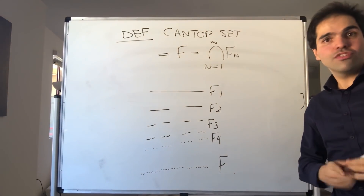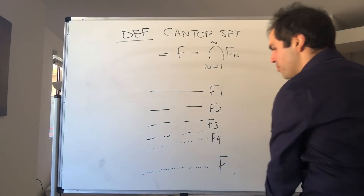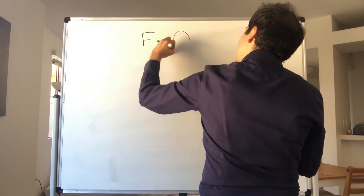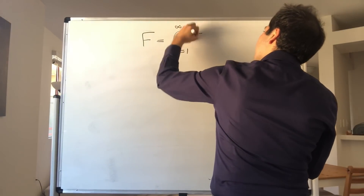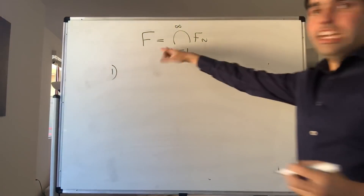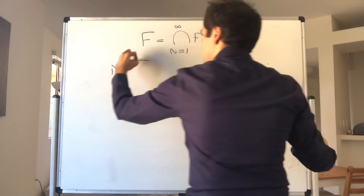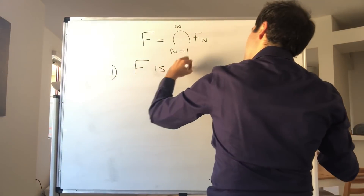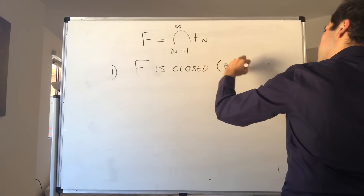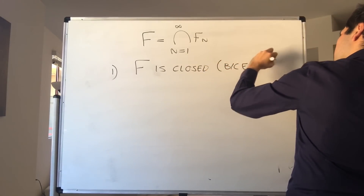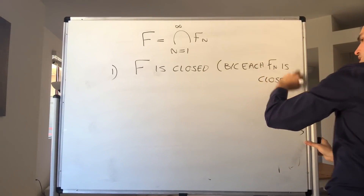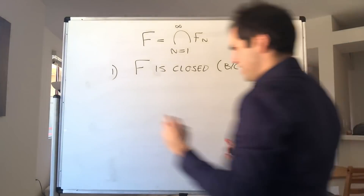Remember, F is just the intersection of all those little pieces. First of all, F is a closed set. Why is that true? Because each Fn is closed, and you're just taking the intersection of infinitely many closed sets.